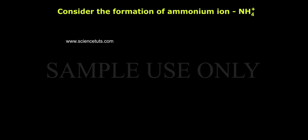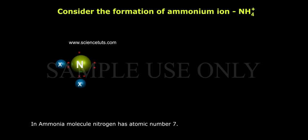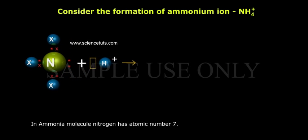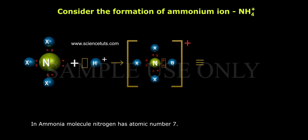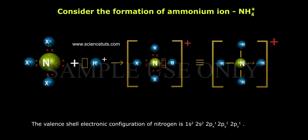Consider the formation of ammonium ion NH4+. In ammonia molecule, nitrogen has atomic number seven. The valence shell electronic configuration of nitrogen is 1s2 2s2 2px1 2py1 2pz1.